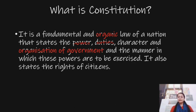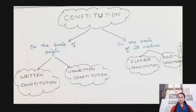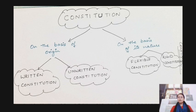Now come to the types of constitution. On the basis of origin, a constitution has two types — written constitution and unwritten constitution. And on the basis of its nature, how it is, it has two types — flexible and rigid.